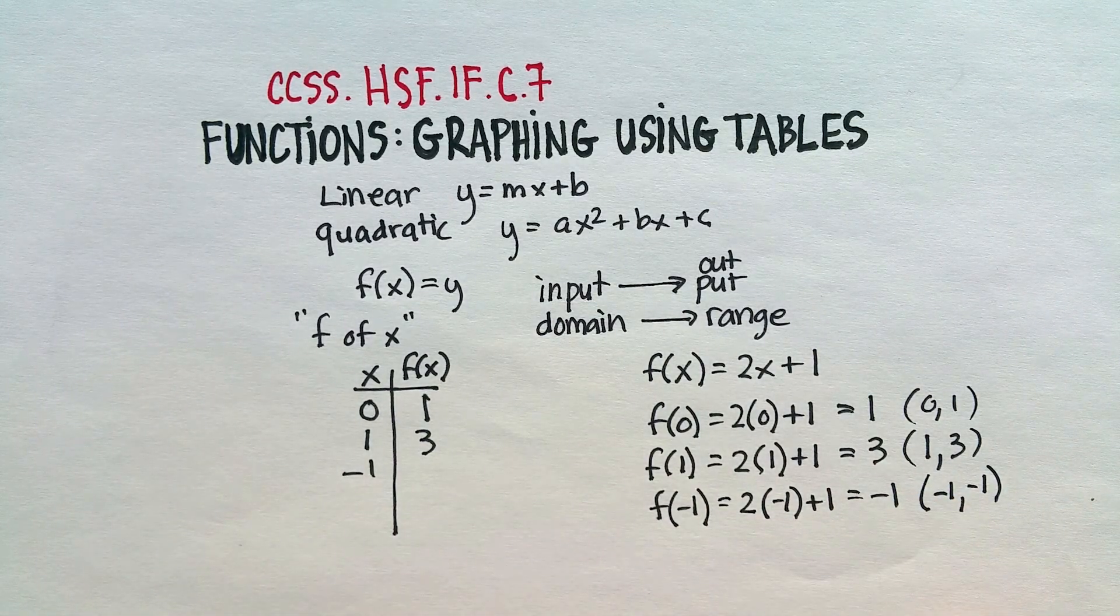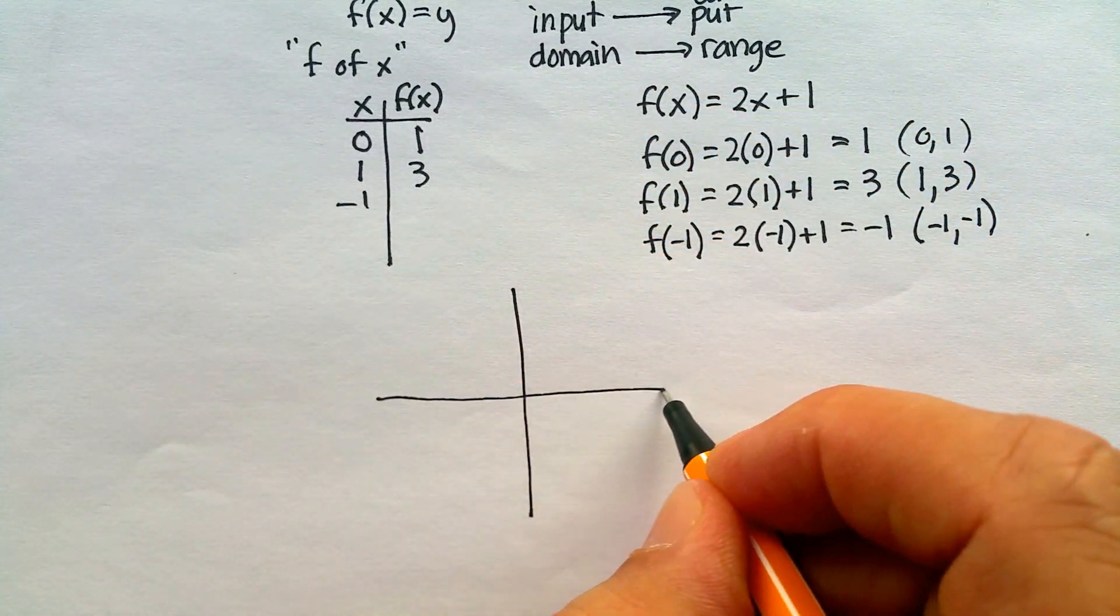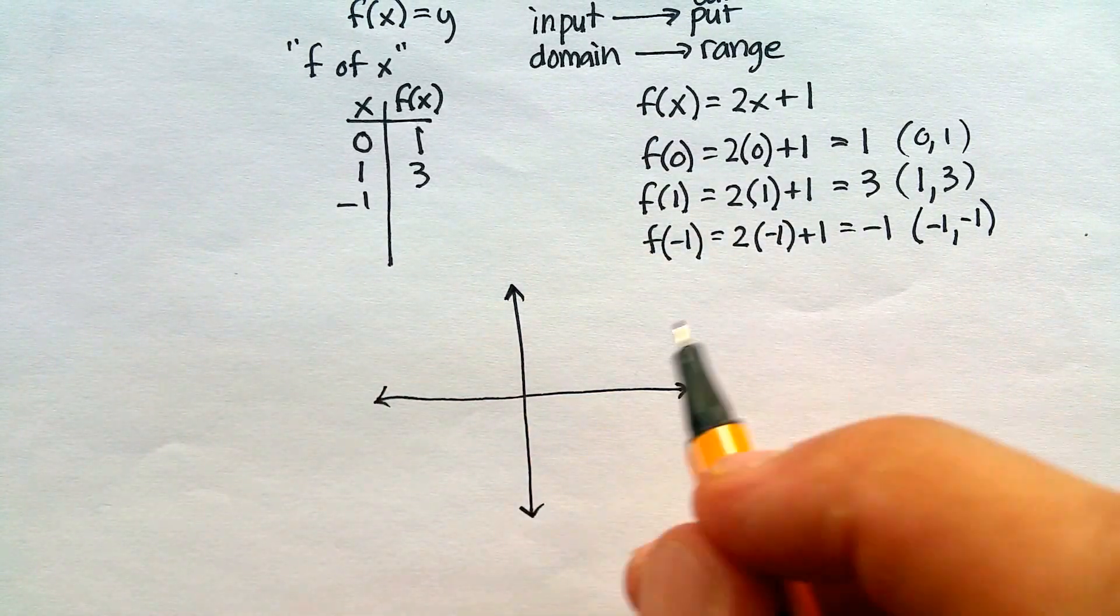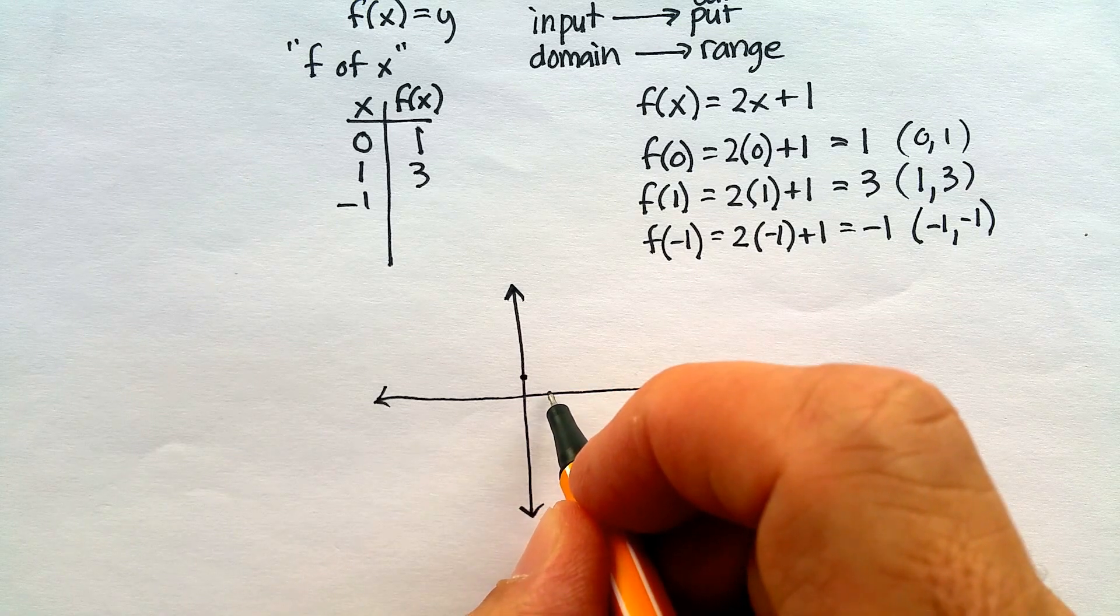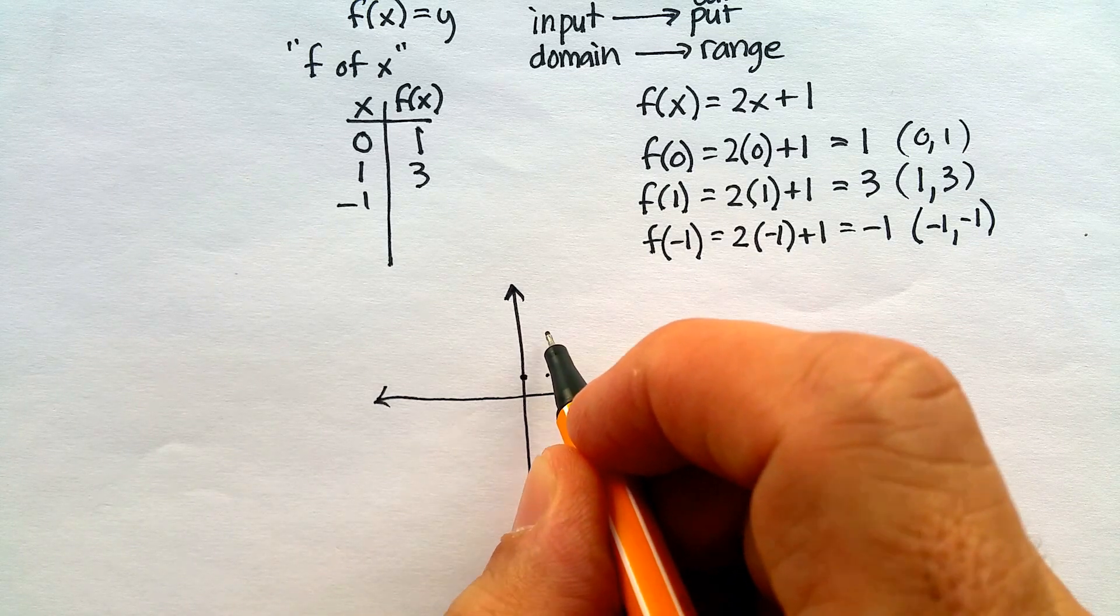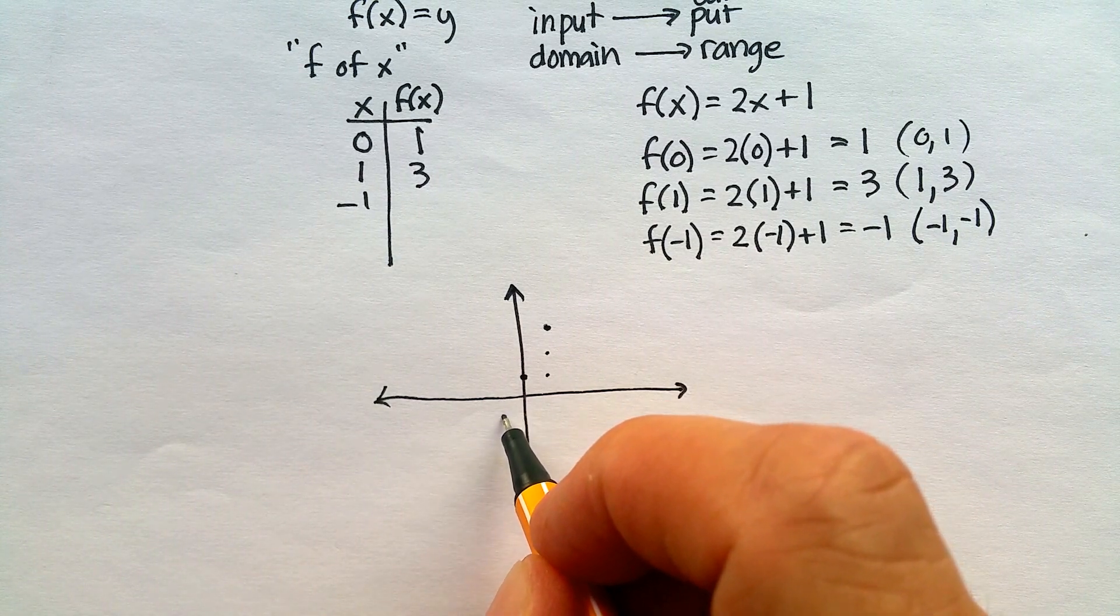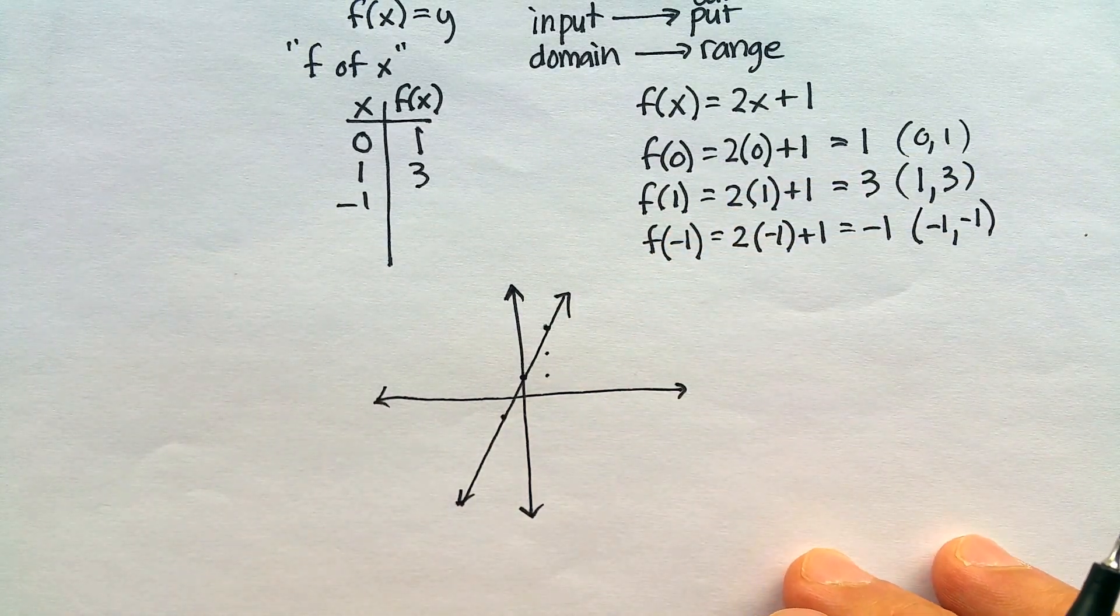And finally, let's just do one more. Let's do the negative 1. So f of negative 1, my input, 2 times that is negative 2 plus 1, gives me negative 1. Therefore, my coordinates would be negative 1 and negative 1. And then you just go ahead and graph that. So from this table, we are going to get this following linear equation. 0, 1, 1, 3, 1, 2, 3. And then negative 1, negative 1, there's my line, and there's my function.